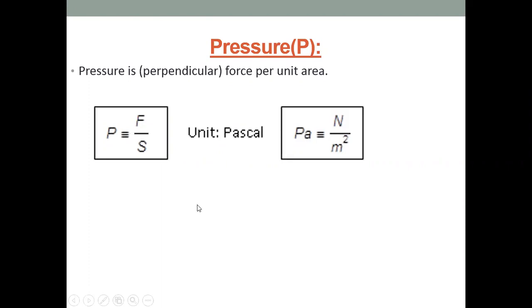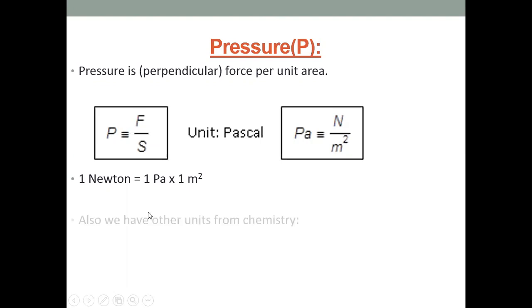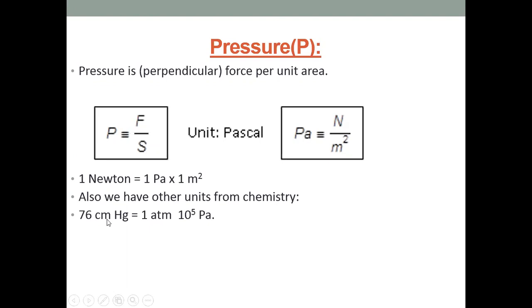From the formula, one Newton equals one Pascal times one meter squared. From chemistry, you may recall that 760 millimeters of mercury equals one atmosphere of pressure, or 10 to the power of 5 Pascal — which is 100,000 Pascal. So 100,000 Pascal equals 76 centimeters of mercury.